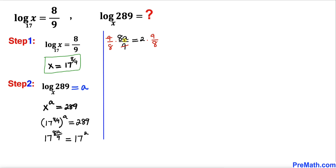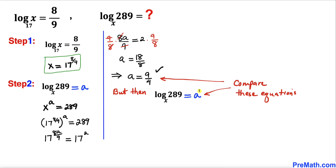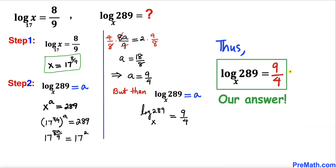Reducing 18 over 8, a turns out to be 9 divided by 4. Since we set log of 289 with base x equal to a, we can conclude that log of 289 with base x equals 9 over 4. Our final answer is 9 over 4. Thanks for watching, and please don't forget to subscribe to my channel for more exciting videos.